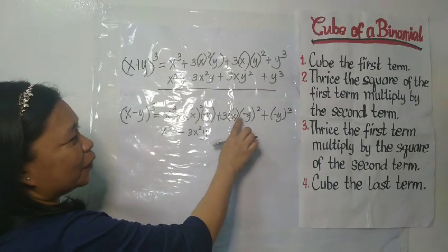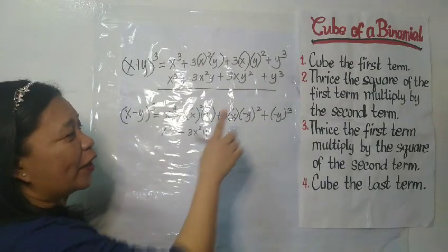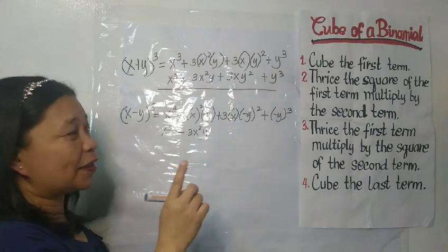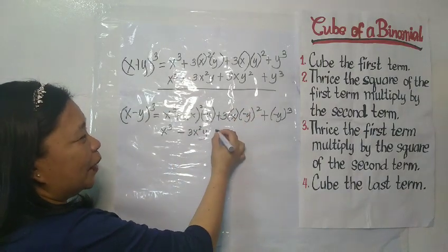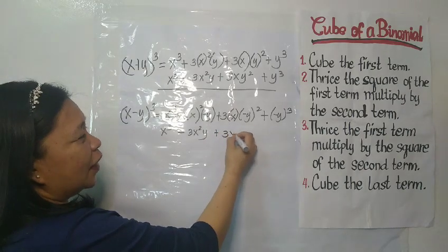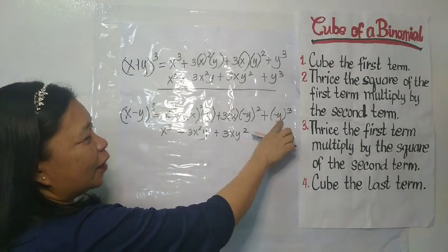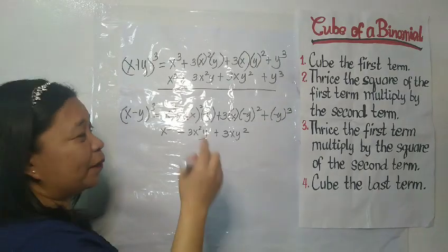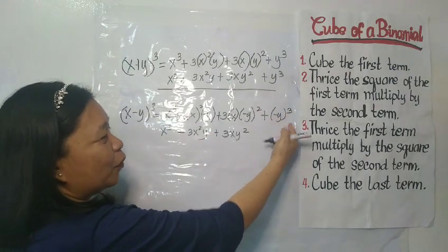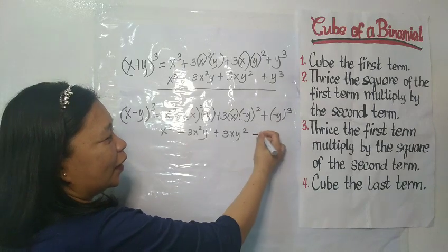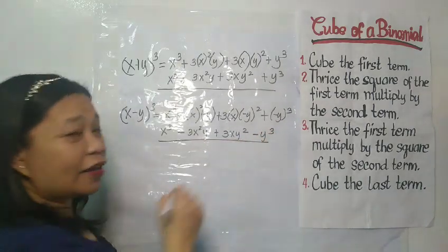Then 3x multiplied by negative y squared. Negative y squared is positive because negative multiplied by negative is positive, so we have positive 3xy². Then negative y cubed. So the final answer is: x³ − 3x²y + 3xy² − y³.